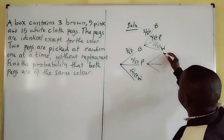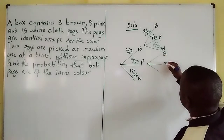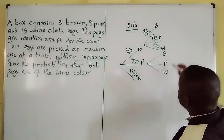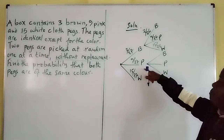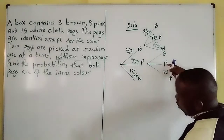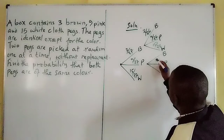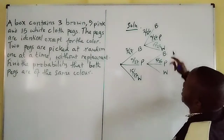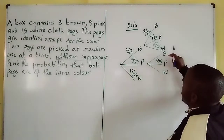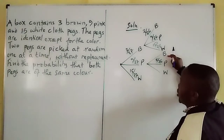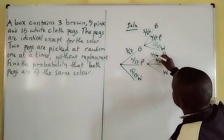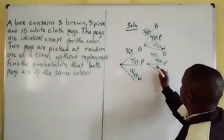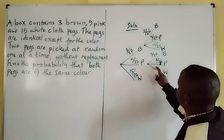If we had picked pink, we can pick brown, pink, or white. Picking pink again now goes down to 8 out of 26. Picking brown is not affected, so it remains 3 out of 26, and white remains 15 out of 26.